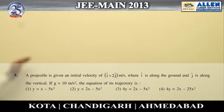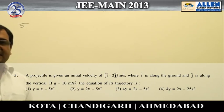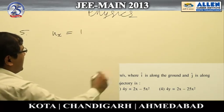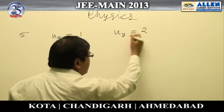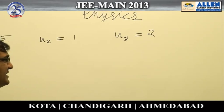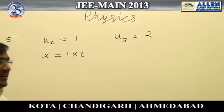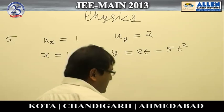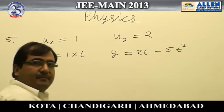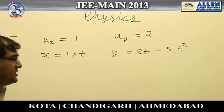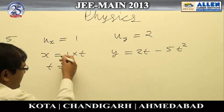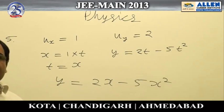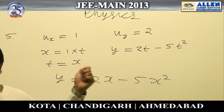Question number five is a simple kinematics question asking for the equation of trajectory. From the given data, the x-component of velocity is 1 and the y-component is 2. The variation of x with time is x = t, and the variation of y with time is y = 2t − 5t² (where 5 = g/2). Eliminating time by substituting t = x, we get y = 2x − 5x², which is the equation of trajectory. Hence the answer is option 3.